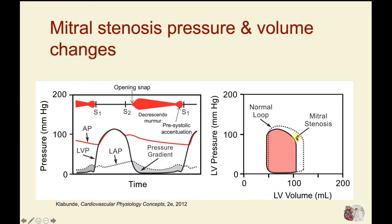Looking at the pressure-volume loops, a normal loop is depicted here with a dotted line. The main difference with mitral stenosis is that the ventricle does not fill to the same end diastolic volume, because of high resistance to flow across the valve. The end diastolic volume is reduced, and therefore the end diastolic pressure will also be reduced compared to the normal loop.